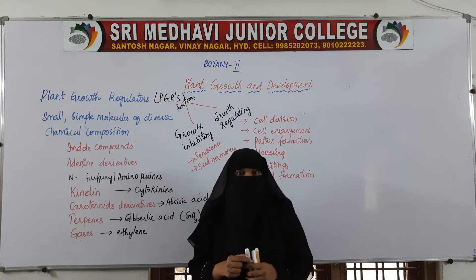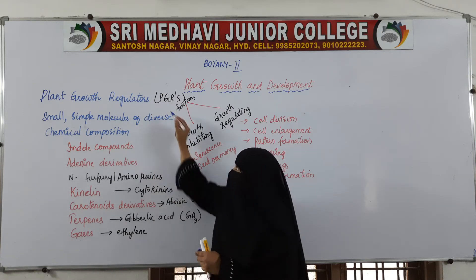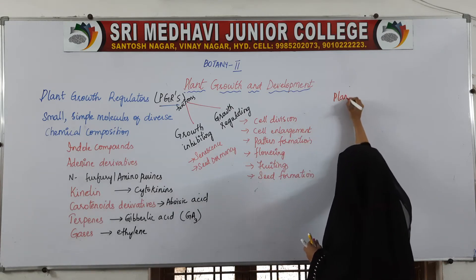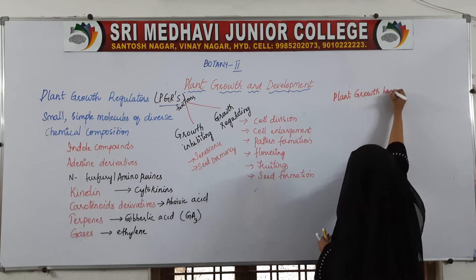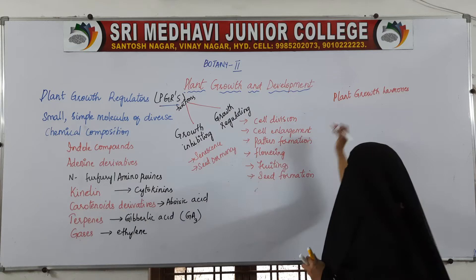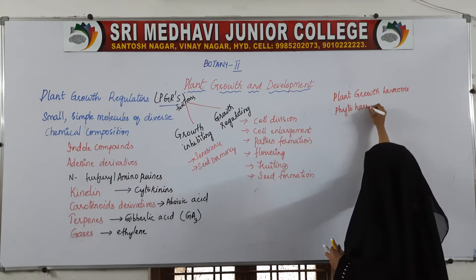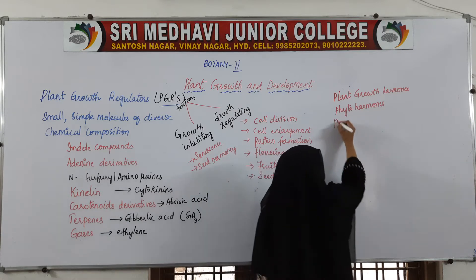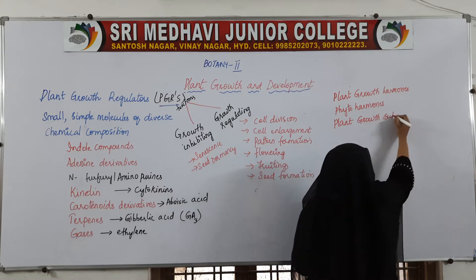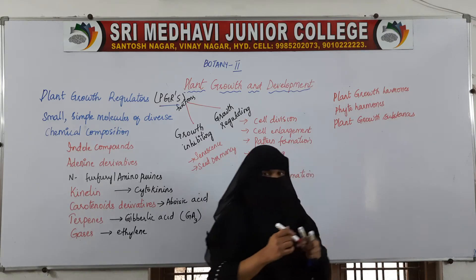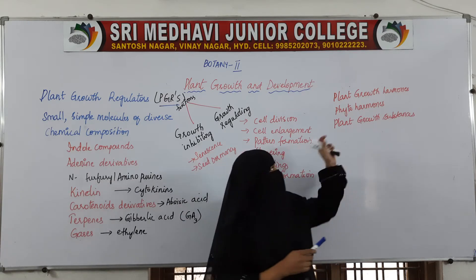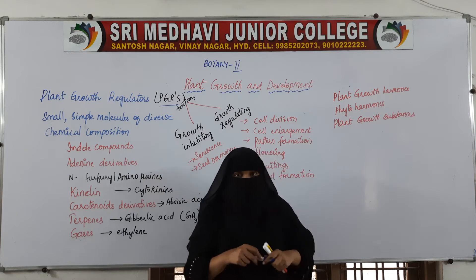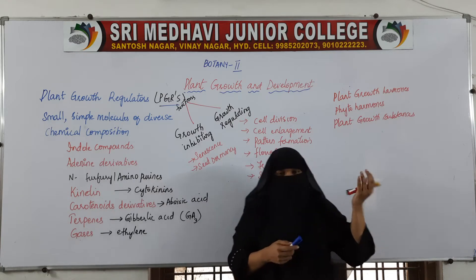These substances are called plant growth regulators, short form PGRs. Plant growth regulators can also be called plant growth hormones, phytohormones, or plant growth substances. All four names refer to the same thing.